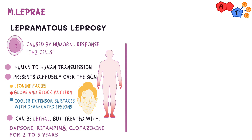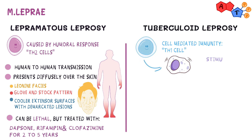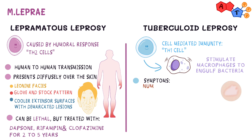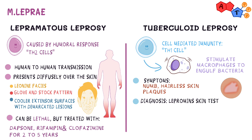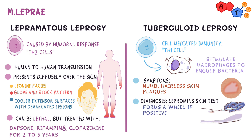On the other hand, tuberculoid leprosy happens because of Th1 cells that stimulate macrophages to engulf bacteria in a cell-mediated immunity. This form has mild symptoms and is limited to a few numb, hairless skin plaques. A lepromin skin test can be used as a diagnostic tool in this form — it tests for an immune reaction similar to TB and will form a wheal if positive. It's treated using dapsone and rifampin, given for 6 months.